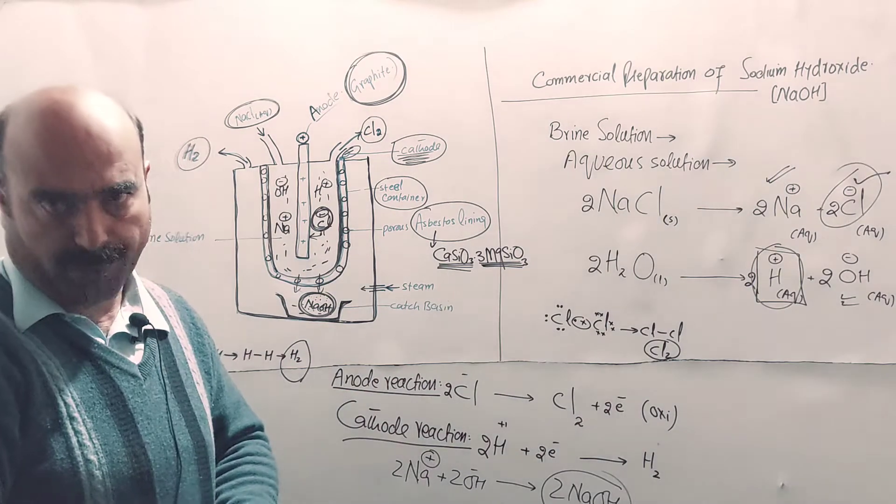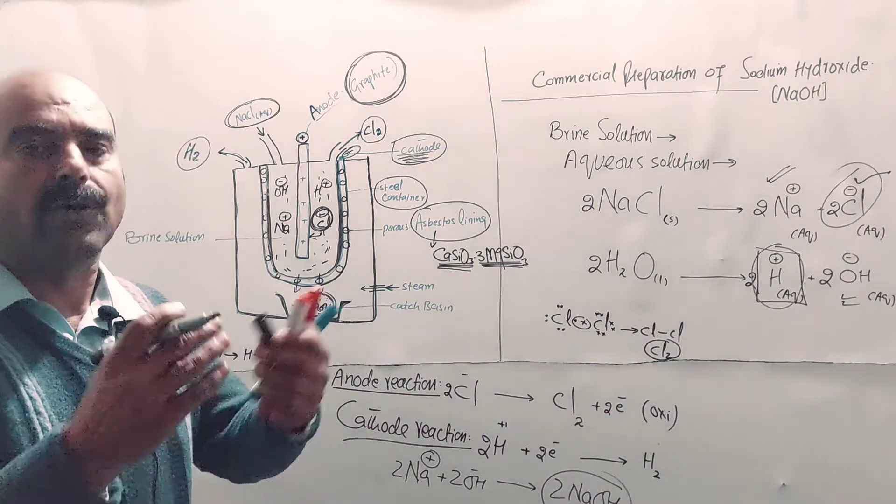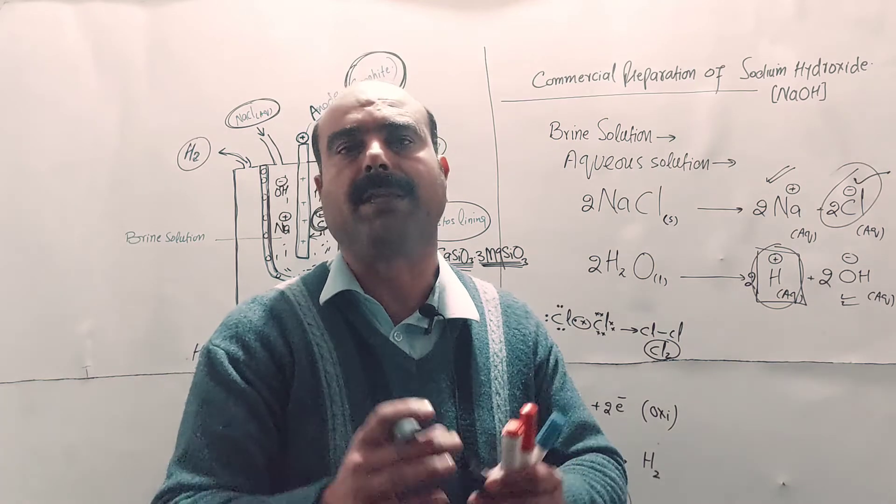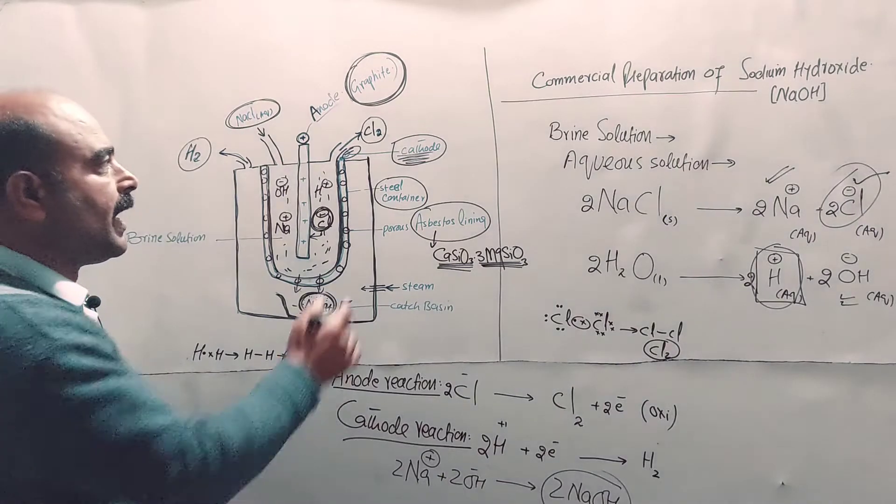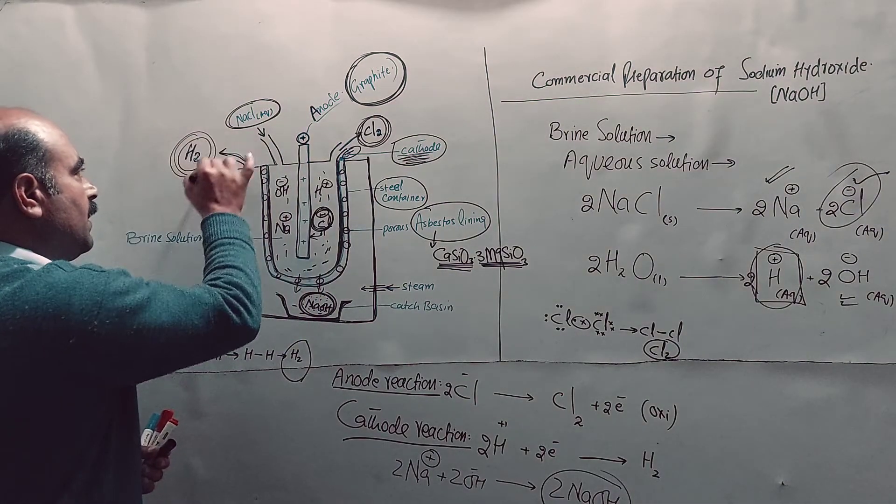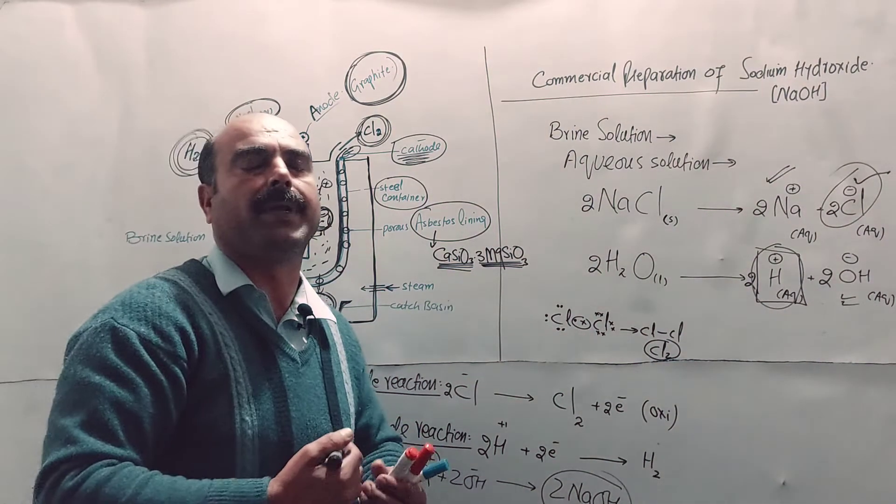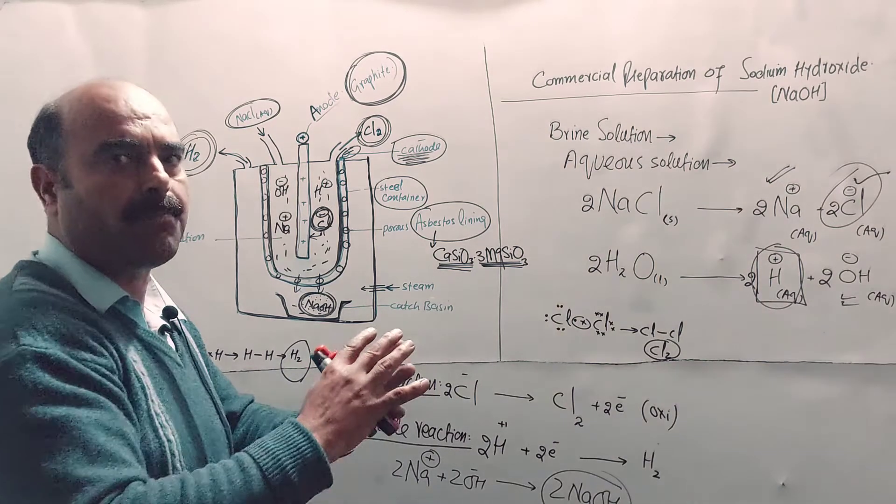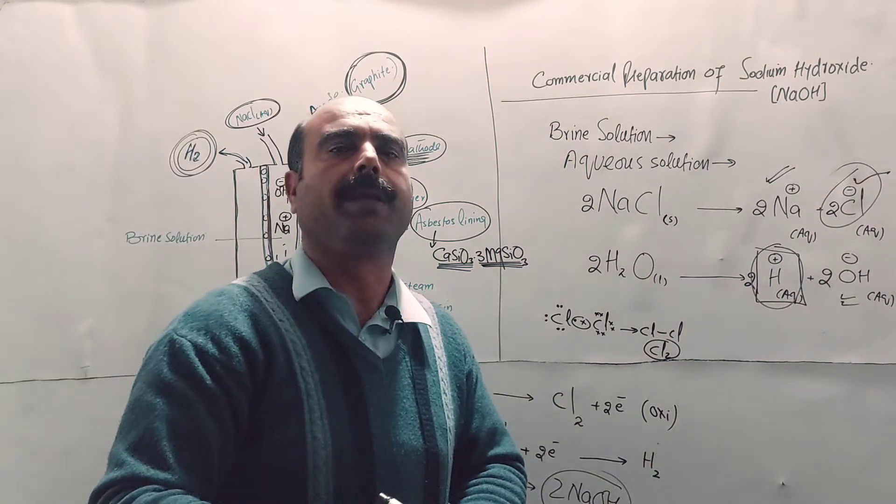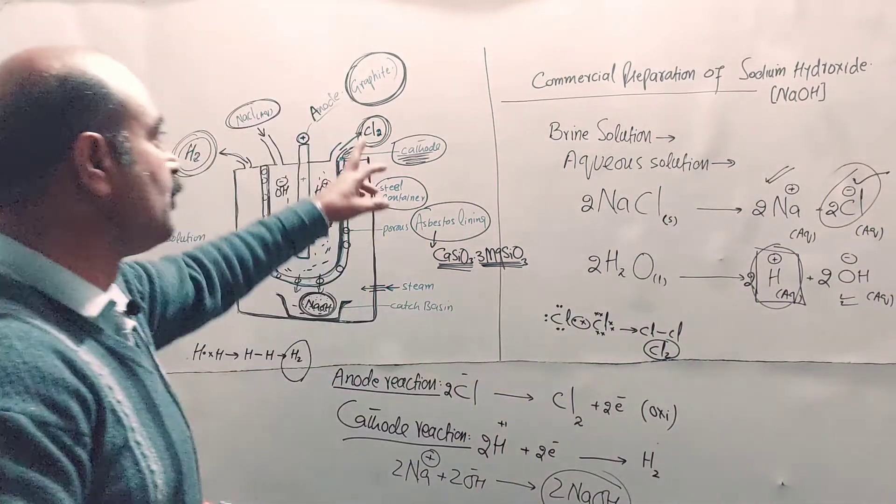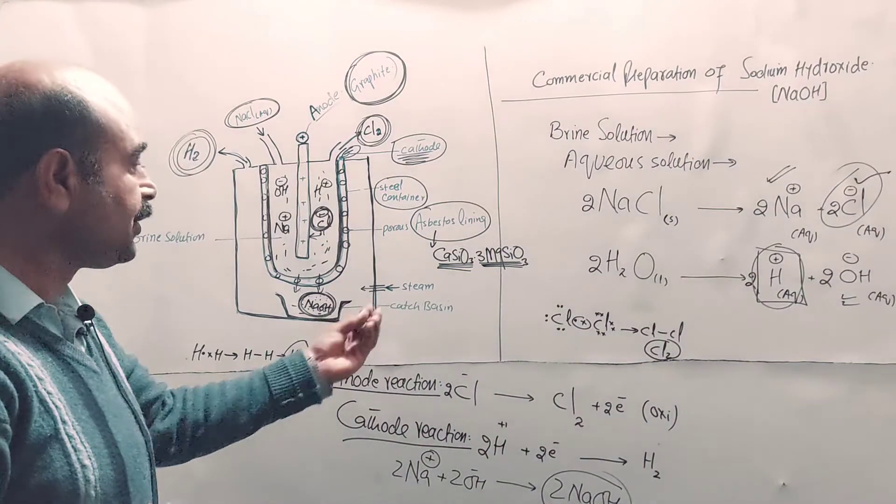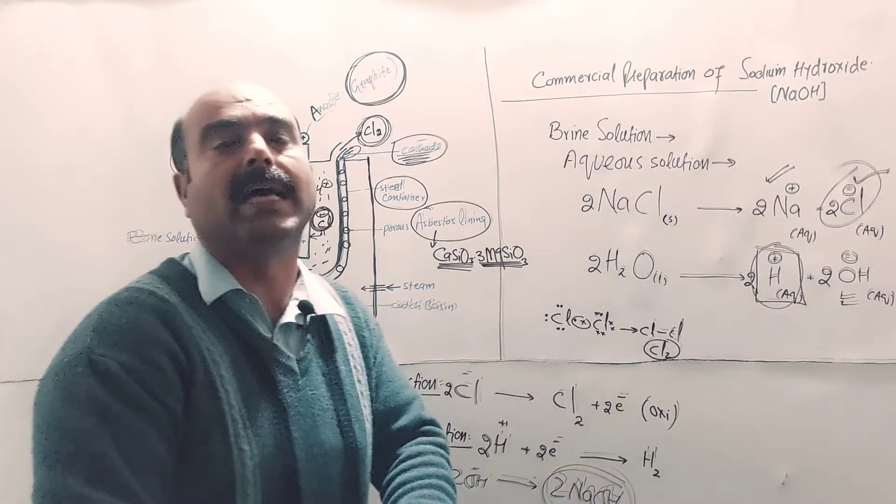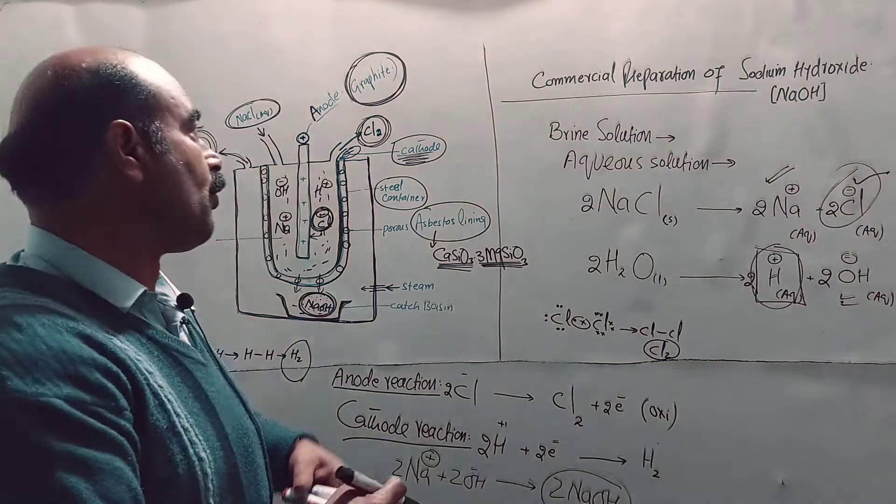This is all about the commercial preparation of sodium hydroxide. Actually, in one process, three products are obtained - one main product. Sodium hydroxide is prepared as the main product, chlorine gas is also prepared, and hydrogen gas is also prepared. If asked about commercial preparation of hydrogen or how chlorine can be prepared commercially or on a large scale, the answer is the same - Nelson cell construction, chemical reactions, and working are the same. Here, the main product or main focus is sodium hydroxide. The other two are known as byproducts.